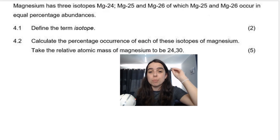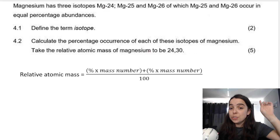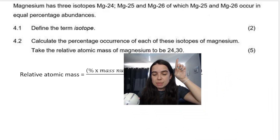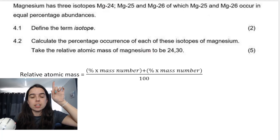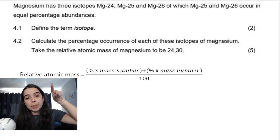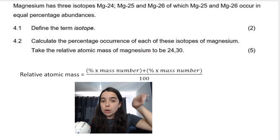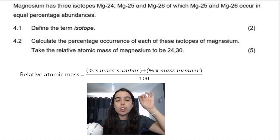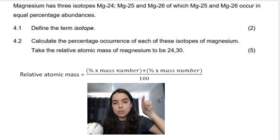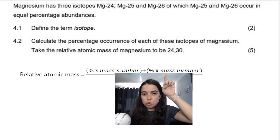So basically what they've done is given me the answer, and you need to work backwards to get the percentages of each of the three isotopes. The 24.3 is the relative atomic mass — the big number that appears on the periodic table. We need to work backwards using this answer to work out the percentage abundance of each of the three isotopes. This formula won't work as-is because it only has two brackets, but I have three isotopes.